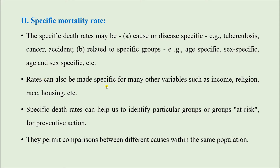Rates can be made for different variables like income, religion, race, housing, occupation, education, and more. Suppose we have calculated age-specific death rates and found that the death rate is higher in a particular age group — that means people belonging to that age group are at higher risk of dying from a disease. So specific death rates can help us find the at-risk population, and preventive action can be taken accordingly. Also, age-specific death rates permit comparisons between different causes within the same population.